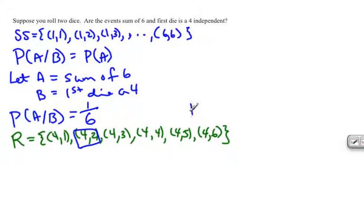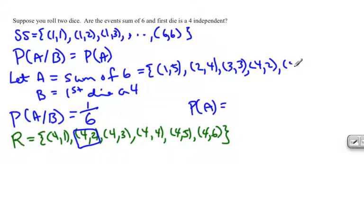Now let's look at the probability of getting just a sum of 6. The event space for getting a sum of 6 would be (1,5), (2,4), (3,3), (4,2), and (5,1).